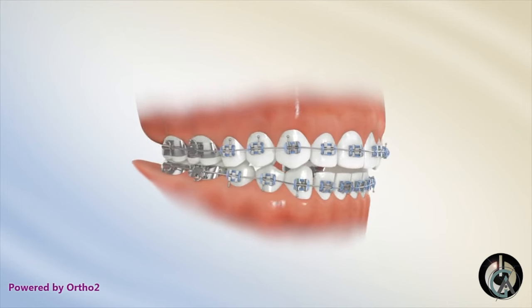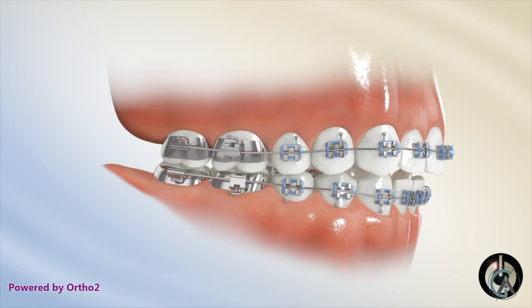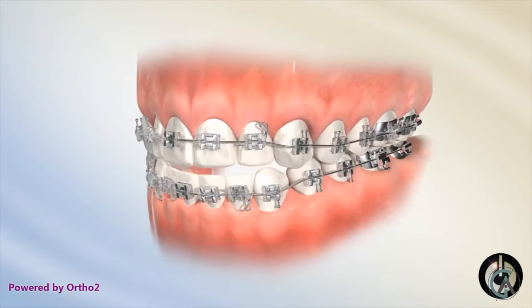Another variant I personally like to use is what I call reverse Class 1 triangles. That's basically attaching the canine and first premolar on the top to the first premolar on the bottom — like the triangle you saw in the animation but flipped upside down. It serves a very similar purpose, but in certain cases it's more advantageous, especially if you're trying to get the back teeth to fit together a little bit better.